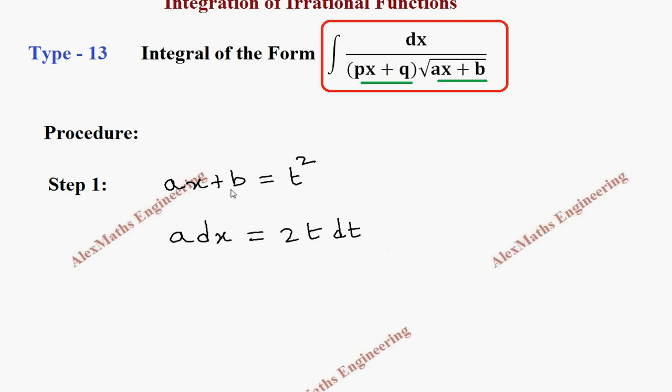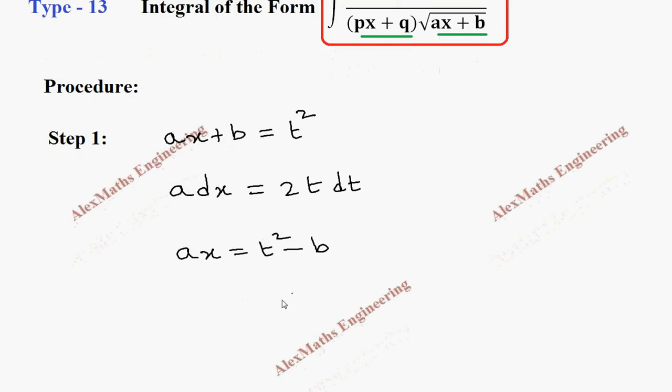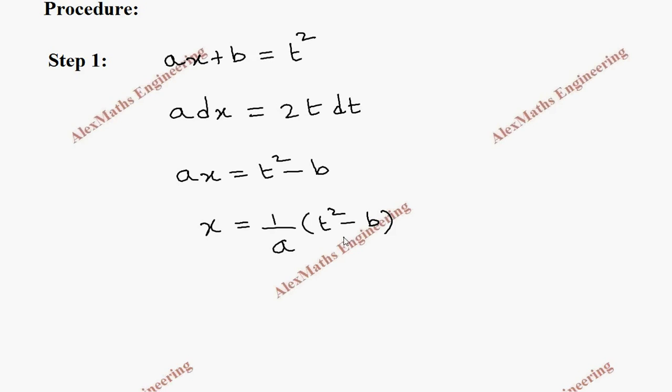Then, from the first term, we have to get what is x. That is, ax equal to t square minus b. And from this, x is 1 by a into t square minus b. Now we have to substitute everything in terms of t.